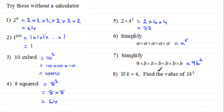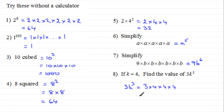Lastly, if k equals four, find the value of three k cubed. Three k cubed is three times k times k times k. Substituting k equals four, we get three times four times four times four. Four fours are sixteen, sixteen fours are sixty-four, and three times sixty-four is one hundred and ninety-two.